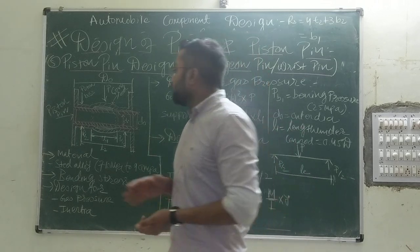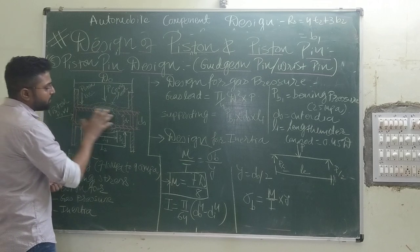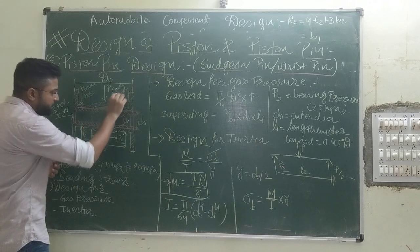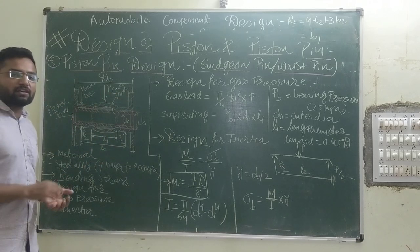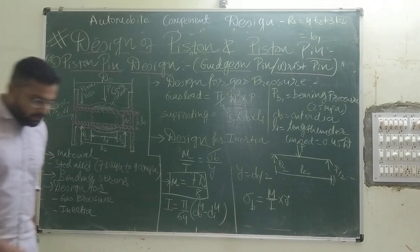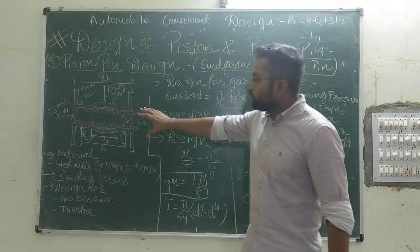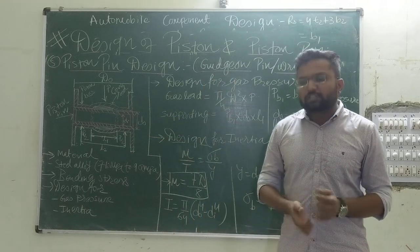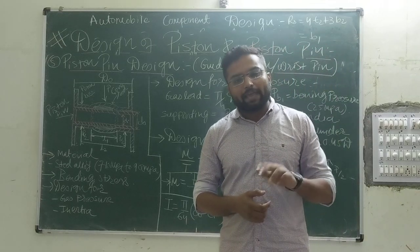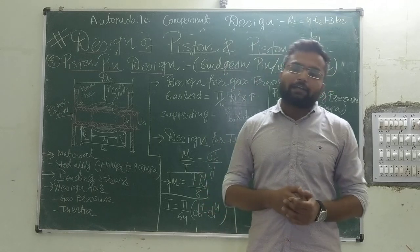Here I have shown a portion of our Piston in which the Piston Pin is placed inside the Piston. This oval-shaped area is a projected area which comes under our connecting rod. The Piston Pin connects the connecting rod and our Piston through this area, and it comes under immense pressure due to gas as well as the inertia forces of our connecting rod and crankshaft.